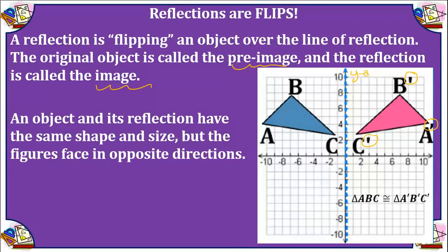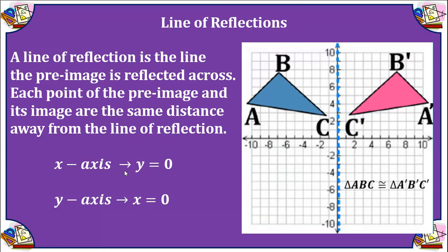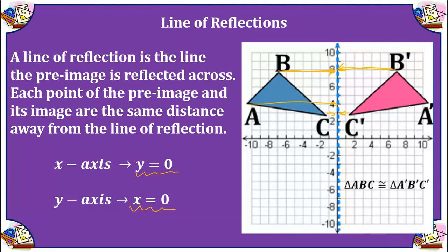The y-axis is the line of reflection in this example. For this lesson we are going to focus on reflecting across the x-axis — sometimes noted as the equation y equals 0, where all y-coordinates are 0 on that line — and the y-axis, also known as x equals 0. Take note that each pre-image point and image point are equally distant from the line of reflection. For example, b and b-prime are both seven units from the line of reflection, and point a and a-prime are equally distant as well.